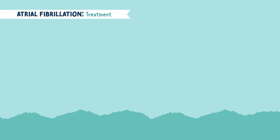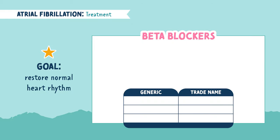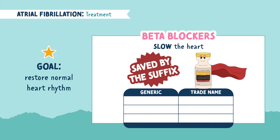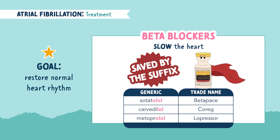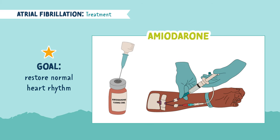In acute situations, restoring a normal heart rhythm is the goal. Several medications will be used. Beta blockers are given to slow and control the rate of the heart — we're saved by the suffix as these drugs end in -olol. Common ones used for AFib are sotalol, carvedilol, and metoprolol. Another drug used is amiodarone, a strong antiarrhythmic which may be used in acute situations to change the rhythm of the heart.